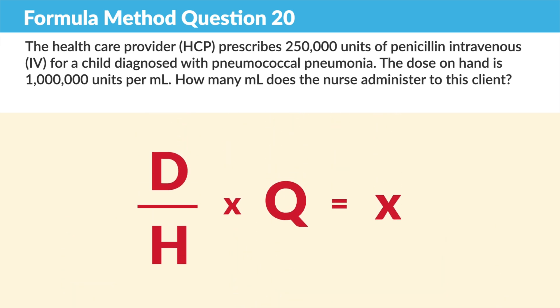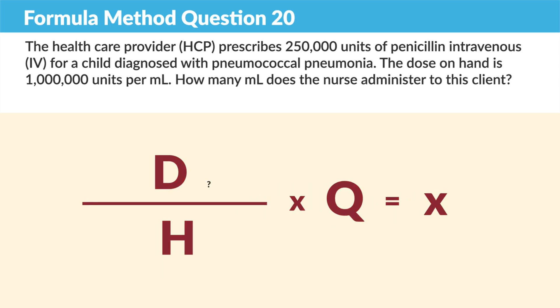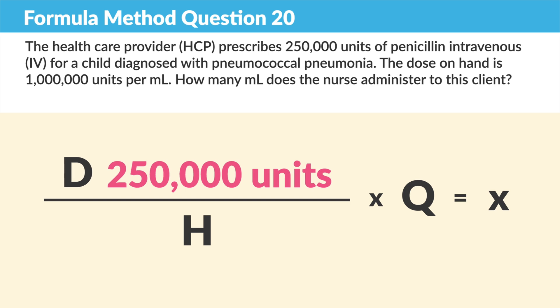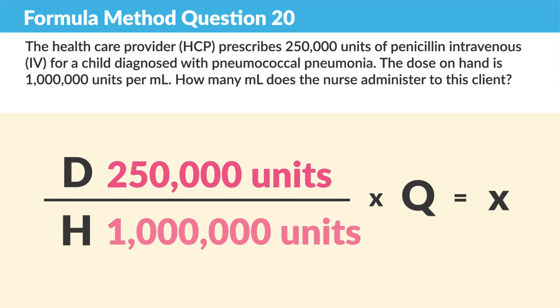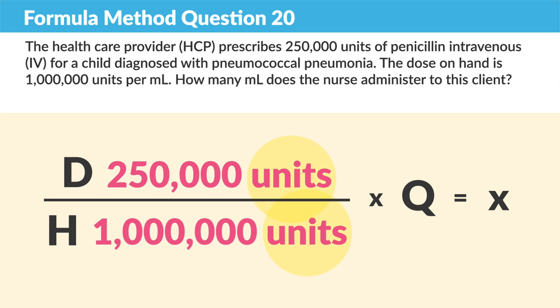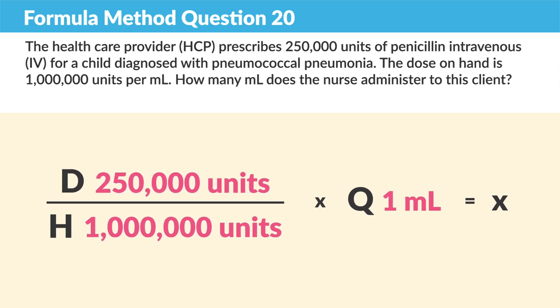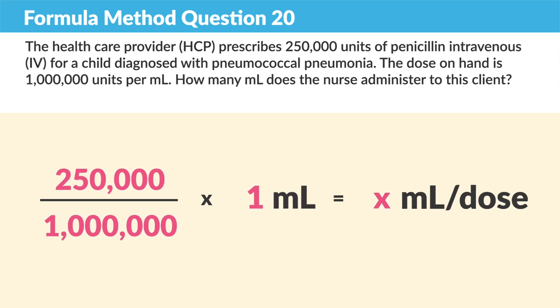So it's D over H times the quantity. The D — the doctor's order, the dose prescribed — is 250,000 units over the H, which is 1 million units. The quantity is 1 ml.